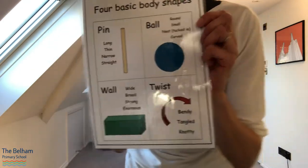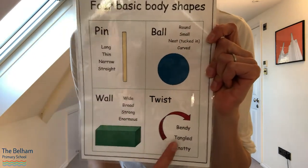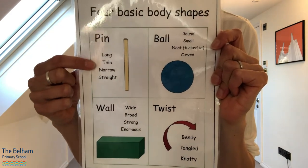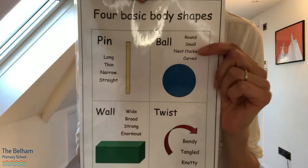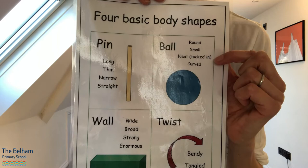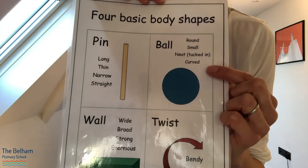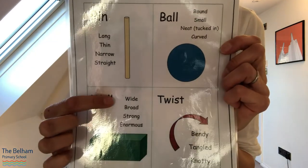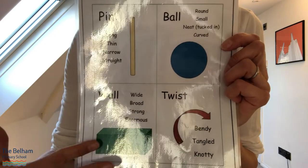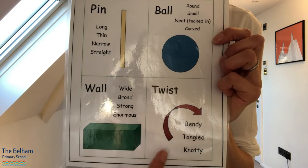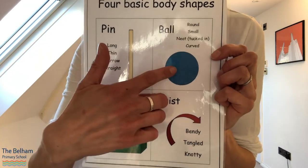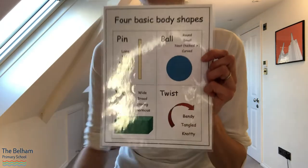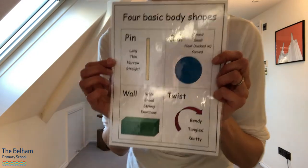Now we've looked at this before, but I want to recap our four basic body shapes: pin, ball, wall, and twist. Pin is long, thin, narrow and straight. Ball is round, small, neat or tucked in and curved. Wall is wide, broad, strong, enormous — a nice solid block. And my favourite, twist, which is bendy, tangled, and knotty. Lots of good dance words there. In dance, we can put these in any order and they make our dances look really, really interesting.